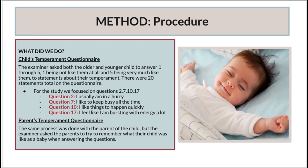For the actual procedure, there were two questionnaires: one for the child and one for the parent. For the child questionnaire, the examiner asked both older and younger children to answer one through five — one being not like them at all, and five being very much like them — to statements about their temperament. There were about 20 statements total, but we focused on questions 2, 7, 10, and 17. Question 2 was 'I usually am in a hurry.' Question 7 was 'I like to keep busy all the time.' Question 10 was 'I like things to happen quickly.' Question 17 was 'I feel like I am bursting with energy a lot.' These questions went along well with our hypothesis about activity level.